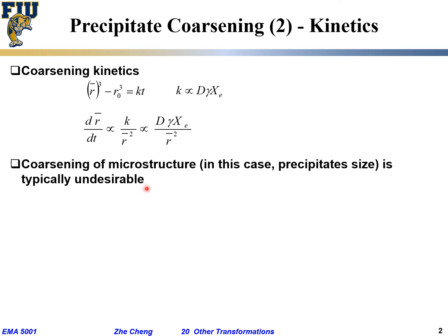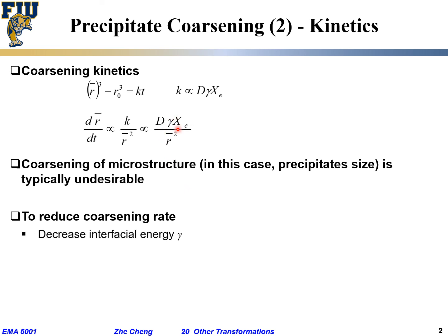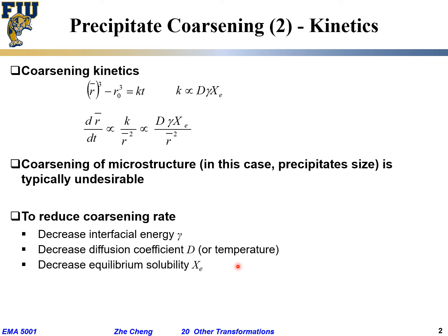Coarsening of microstructure is typically undesirable because people want stronger, harder, and tougher materials. To reduce the coarsening rate, you can decrease the interfacial energy γ by making the two phases more compatible. Alternatively, decrease the diffusion coefficient—most effectively by limiting temperature, since for a given system you cannot easily change diffusivity but you can limit usage temperature. Decreasing equilibrium solubility is also a strategy, though more difficult to implement.